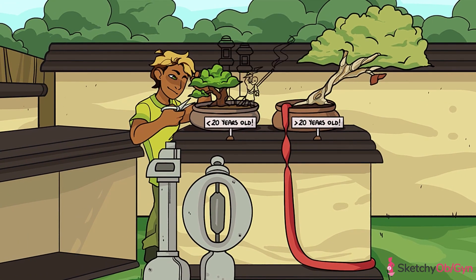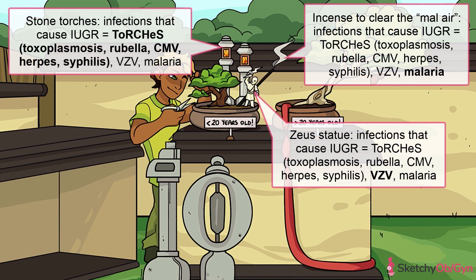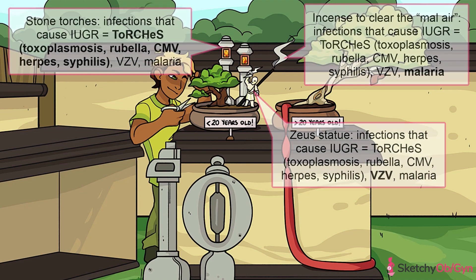On the other hand, maternal infection and medication use during early pregnancy can cause symmetric IUGR. The most common infectious culprits are the TORCH infections — toxoplasmosis, rubella, CMV, herpes, and syphilis — symbolized by these torches. Varicella zoster virus, represented by the zoo statue, and malaria, represented by this incense clearing the mal-air, are also well-known infectious causes of fetal growth restriction.